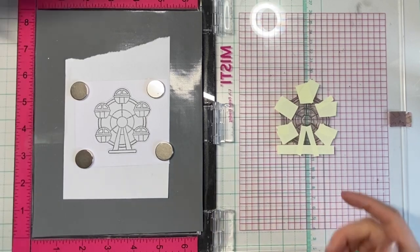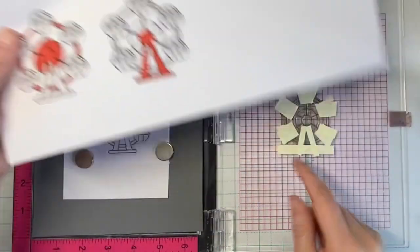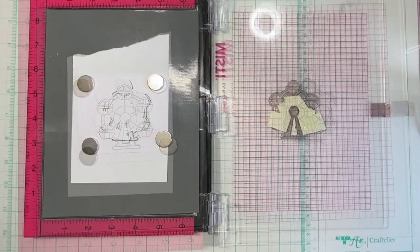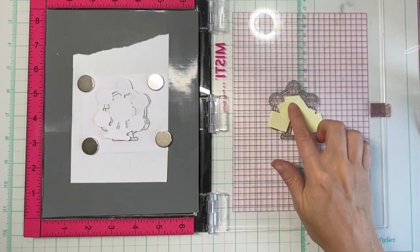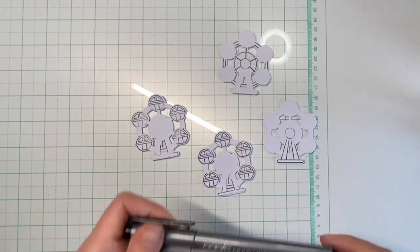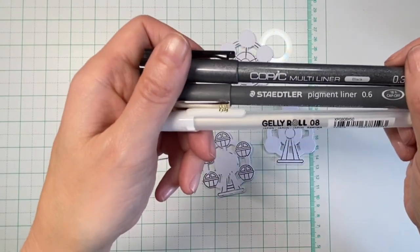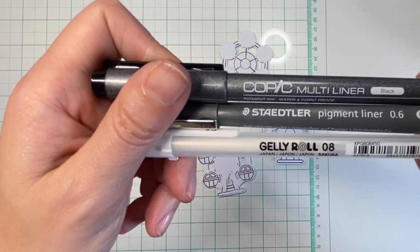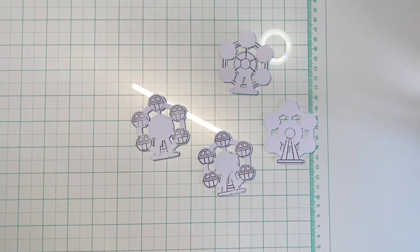Then I needed to repeat the process for the wheel and the pole. So now it's time to clean the stamped images by drawing in missing parts or removing unwanted parts with the white gel pen.